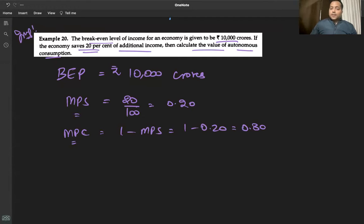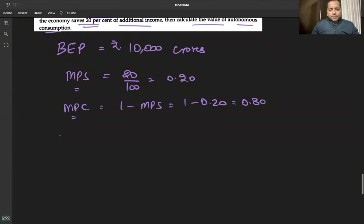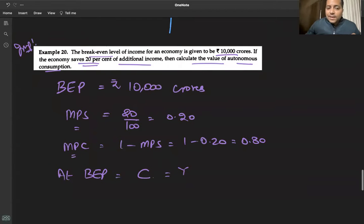Now at break-even point, the break-even level of an economy is 10,000 crores. So at break-even point, income is 10,000, and consumption will be 10,000.